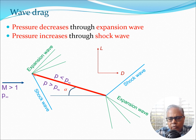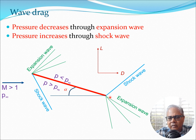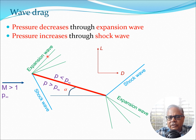Now if we look at a flat plate — and the reason we look at a flat plate is that in supersonic flow the very thin airfoils with sharp edges we use are very similar to a flat plate — if I take the flat plate and put it at an angle alpha, two shock waves are going to form at the leading edge and at the trailing edge, and there are also expansion waves which form here. The expansion waves are shown in green and the shock waves in blue. The pressure decreases through the expansion wave but increases through the shock wave.